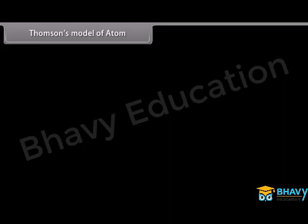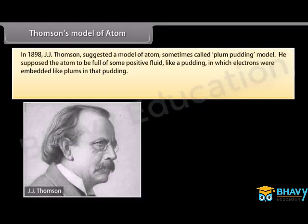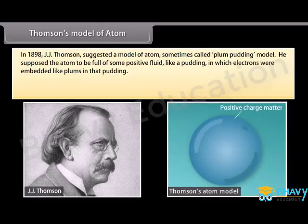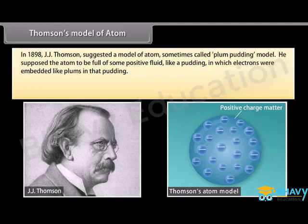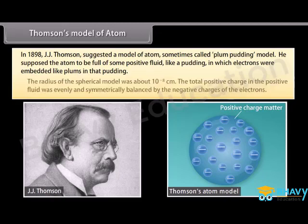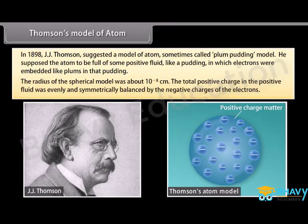Thomson's model of the atom: In 1898, J.J. Thomson suggested a model of the atom, sometimes called the plum pudding model. He supposed the atom to be filled with some positive fluid like a pudding, in which electrons were embedded like plums. The radius of the spherical model was about 10 raised to the power minus 8 centimeters. The total positive charge was evenly balanced by the negative charges of the electrons. This model was discarded because it failed to satisfy the results of Rutherford's experiments.